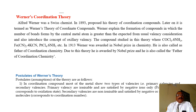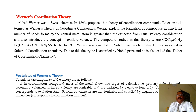This theory was given by Alfred Werner. He was a Swiss scientist. In 1893, he proposed his theory of coordination compounds. Later on, it was termed Werner's theory of coordination compounds.